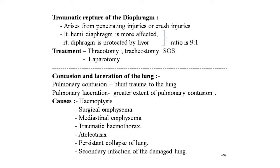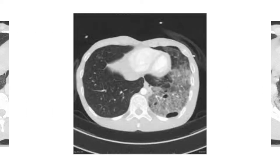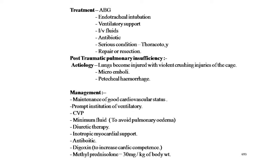Contusion and laceration of the lungs: lungs are often injured in moderate to severe chest wall trauma. Pulmonary contusion is the term used for the consequence of blunt trauma to the lung. Pulmonary laceration represents a greater extent of pulmonary contusion injury. Injury to the lung is clearly evident by hemoptysis — in every case of thorax injury, the patient must be asked whether they have coughed up blood. Causes/complications include hemoptysis, surgical emphysema, mediastinal emphysema, traumatic pneumothorax, traumatic hemothorax, atelectasis, persistent collapse of the lung, and secondary infection of the damaged lung. Here is a clear picture showing contusion of the lung and laceration of the lung.